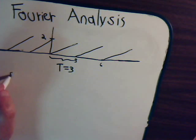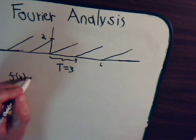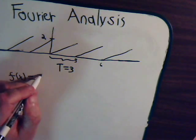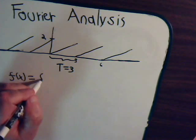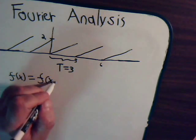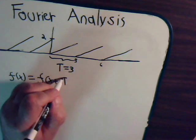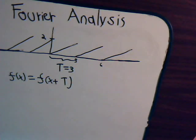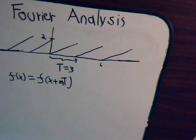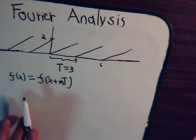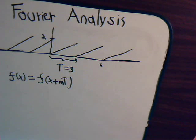So we would have f of x is equal to f of x plus nT, where we could say any positive integer multiplying T where T is the period of the function. And these are the types of functions then that we can expand in a Fourier expansion series.